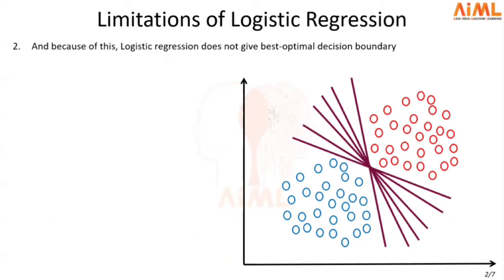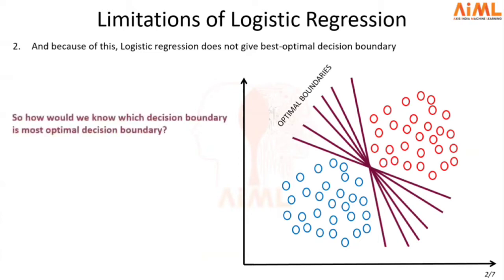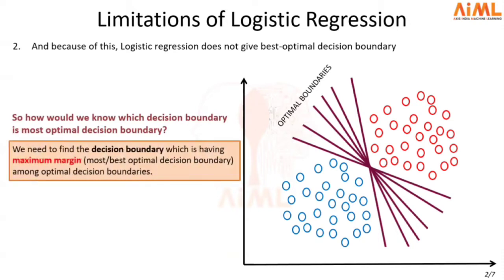Hence, it is very difficult to obtain the most optimal decision boundary out of all these optimal decision boundaries. The question is: how do we know which decision boundary is the most optimal? The most optimal decision boundary is that decision boundary which has the maximum margin among all the optimal decision boundaries.